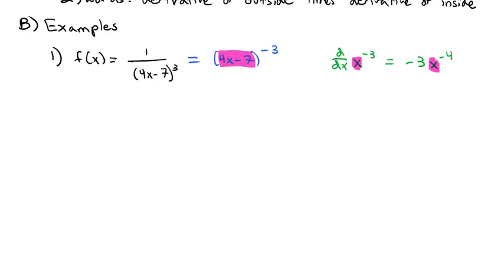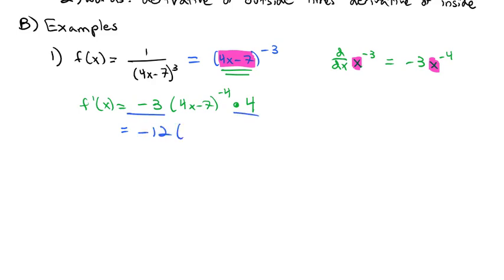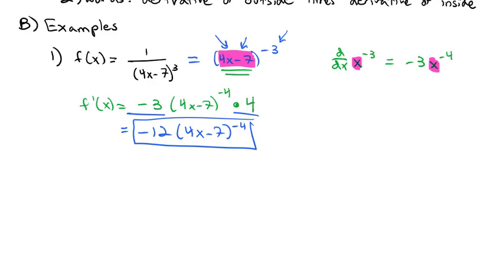If this were just x to the negative 3, the derivative would be negative 3x to the negative 4. So f′(x) equals negative 3 times (4x − 7) to the negative 4 power, and then we multiply by the derivative of the inside. The derivative of (4x − 7) is just 4, giving us negative 12 times (4x − 7) to the negative 4 power as our final derivative.